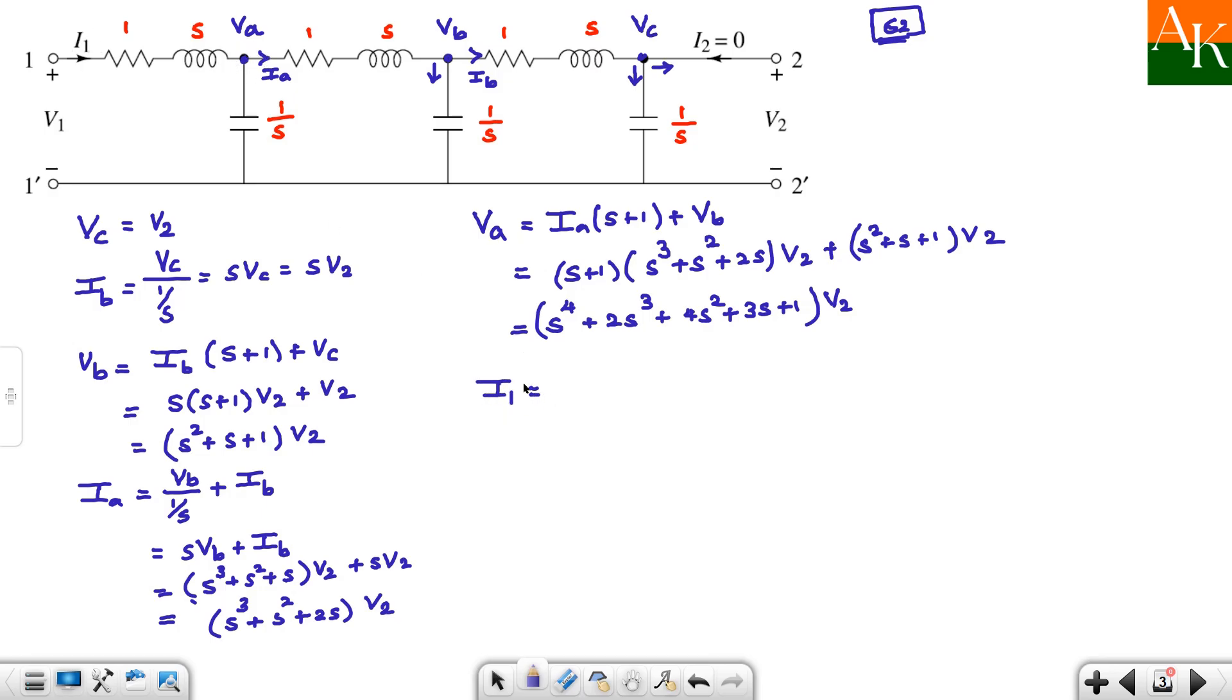Next you have to find out i1. So how do you write i1? I1 arrives at this junction and gets splitted into two parts. The vertical arm current is va by 1 by s, and then the horizontal part, this current is nothing but ia. So va we already got, multiply by s. This will become s⁵ + 2s⁴ + 4s³ + 3s² + s, this is va times 1 by s, plus ia. Ia we got as s³ + s² + 2s times v2. I've taken v2 common. I solved this at a stretch; in the exam don't do it like this, solve step by step to avoid mistakes. So you will get s⁵ + 2s⁴ + 5s³ + 4s² + 3s into v2. So you've found i1.